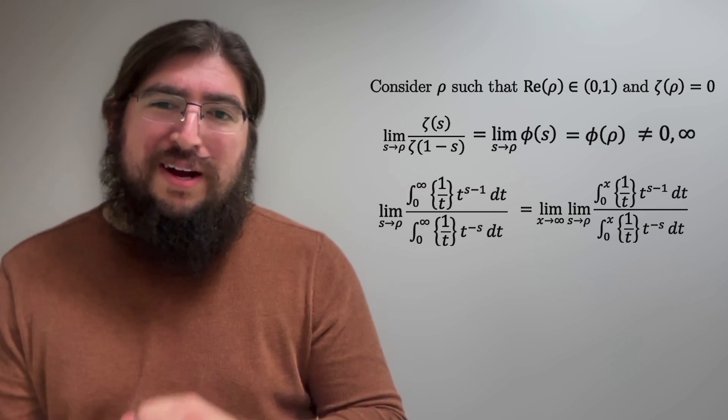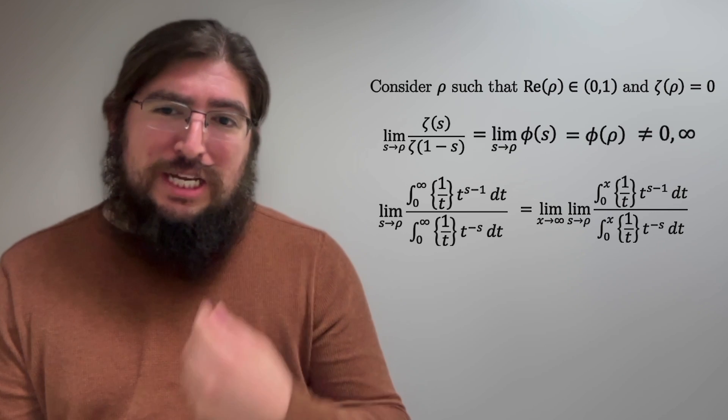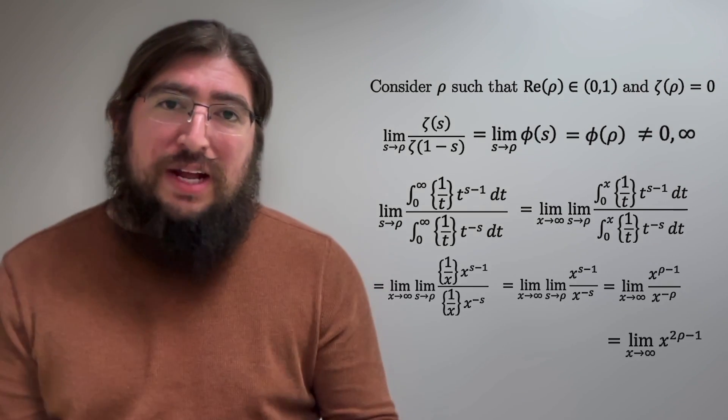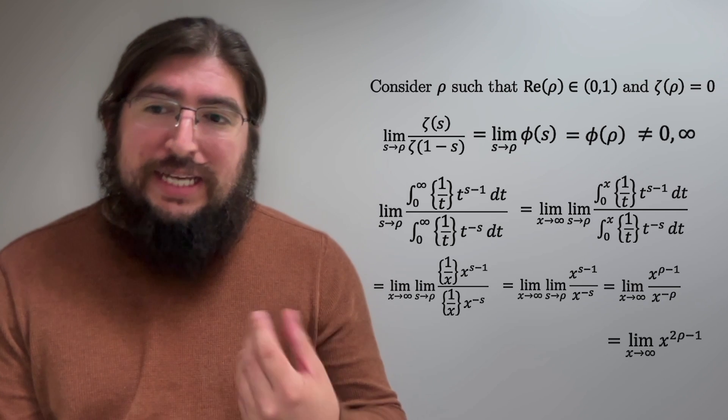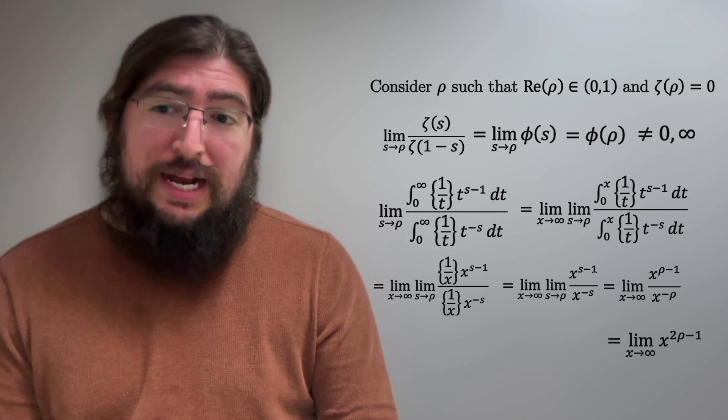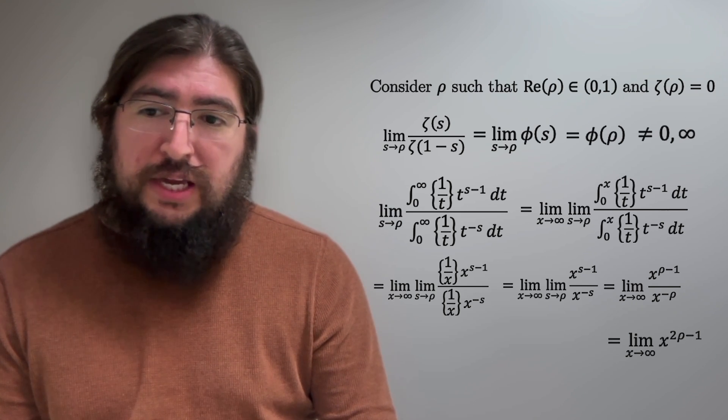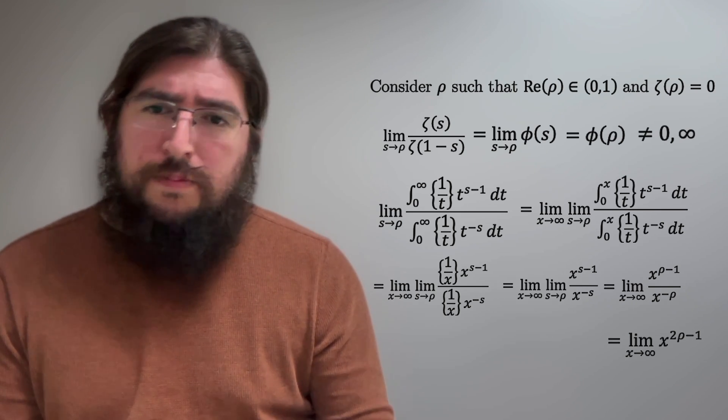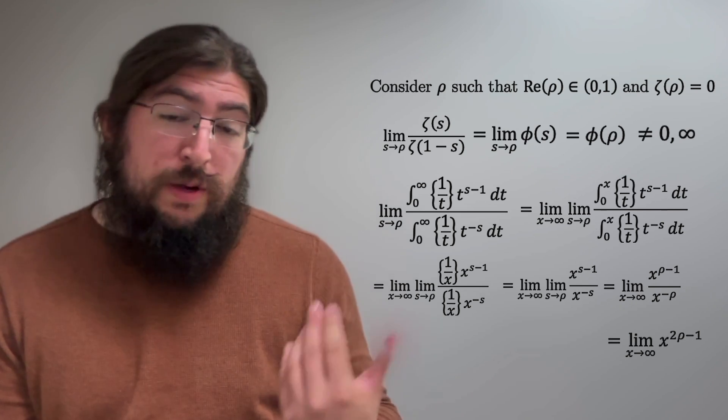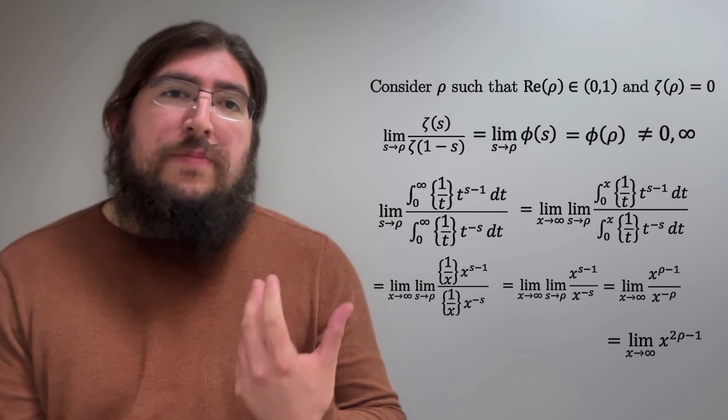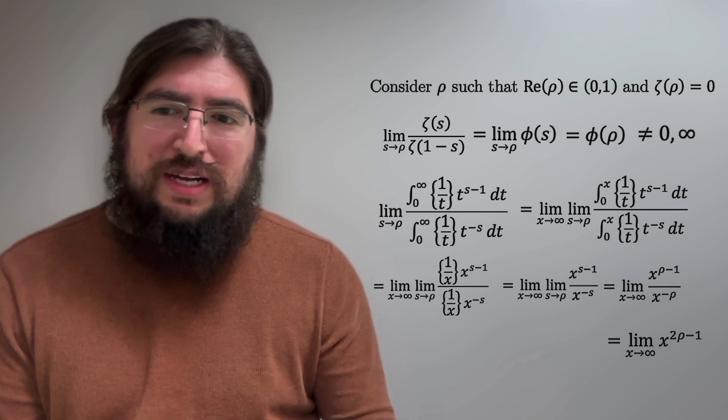By the fundamental theorem of calculus part 1, derivative of an integral where the top limit of the integral is x, well, is just the integrand evaluated at x. Now, in this case, the fractional part 1 over x actually cancels, and the inside just turns into x to the, well, 2s minus 1. But since s is approaching rho, we get x to the 2 rho minus 1.